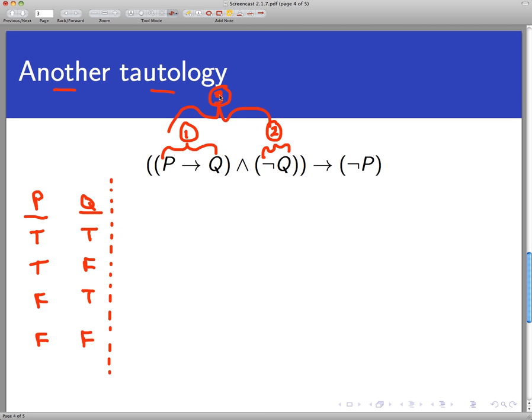Now once I have a column that lays out the truth values for P implies Q and not Q, I'm going to need a third one to do the entire and statement. So another column for that whole thing. That would, once I create that column three, that'll be the entire hypothesis for this conditional statement. Then I have to take care of the conclusion. This is a not P, so I'm going to need to make a fourth column for not P. And then finally I'll be able to make a gigantic fifth column for the entire statement. So I'm going to make five columns here.